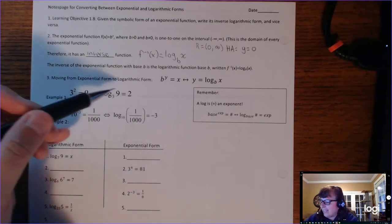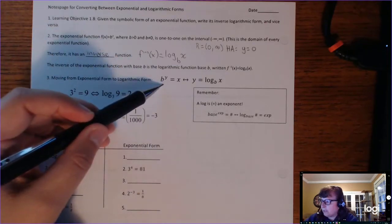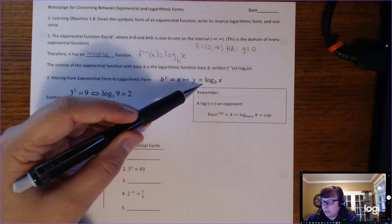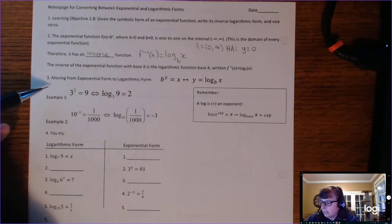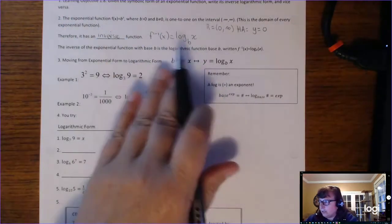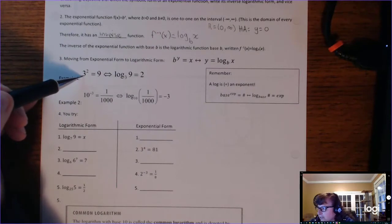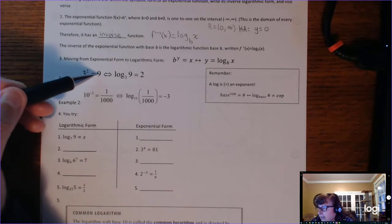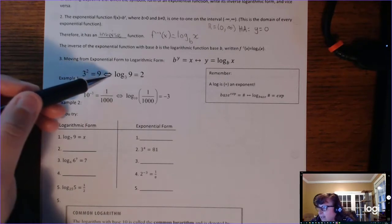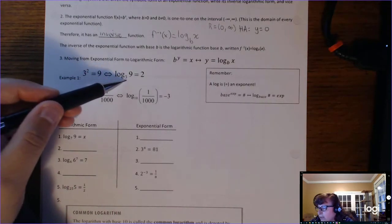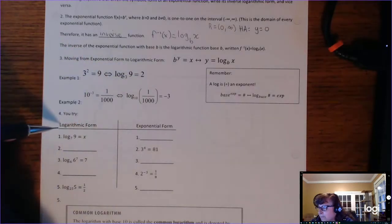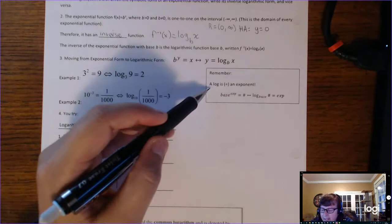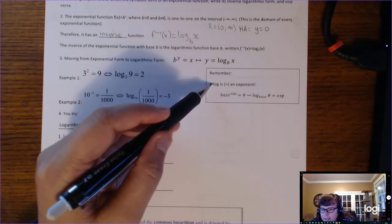We need to understand how to go back and forth from exponential form to log form — that's all we're going to do in this section. In exponential form, 3 to the second power equals 9. You have a base of 3, an exponent of 2, and an answer of 9. To rewrite that in log form, it would be log base 3 of 9 equals 2. A log is an exponent.